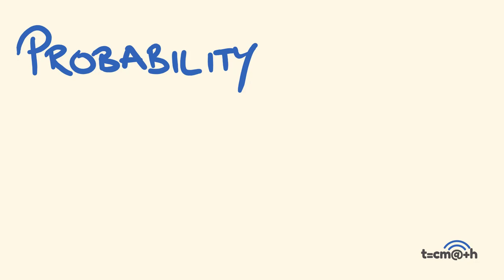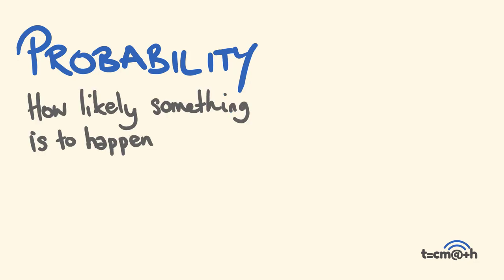In maths, when we are talking probability and chance, what we are talking about is how likely something is to happen. I'm going to go straight into some examples because I think it's the best way to explain it. The example I'm going to have a look at is: say I threw a coin in the air.